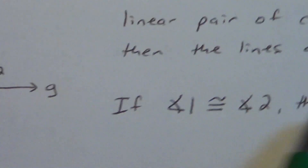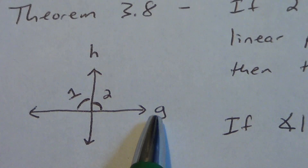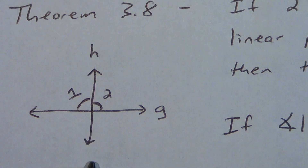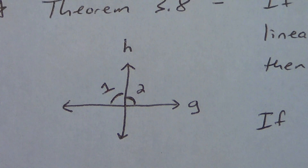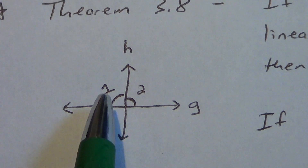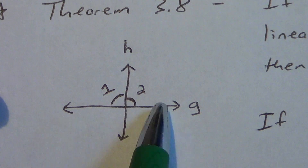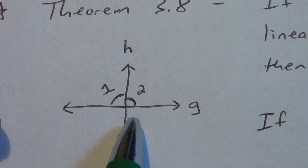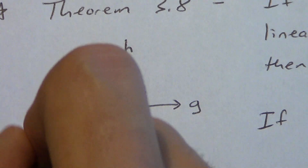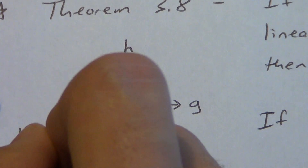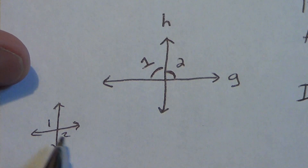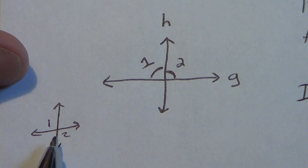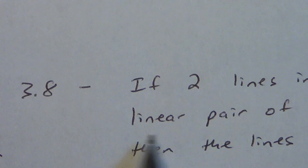When we use lowercase letters, we can sometimes do that for lines. So a lowercase letter represents a line — this lowercase letter H represents this line. But capital letters represent points. If angle one is congruent to angle two, then these lines have to be perpendicular. Now that doesn't work if I were to put angle one here and angle two there, because those are vertical angles. Vertical angles are always congruent, whether these lines are perpendicular or not. So that's why it says in here linear pair.